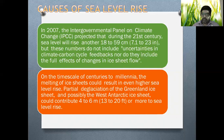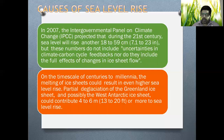That is about 7.1 to 23 inches — this is a huge amount. These numbers do not include uncertainty in climate-carbon cycle feedbacks, nor do they include the full effect of changes in ice flow.